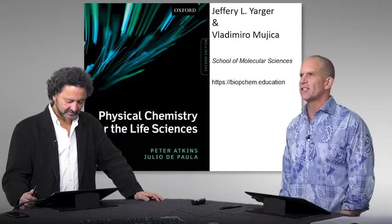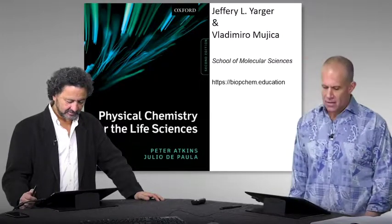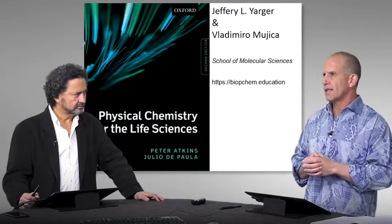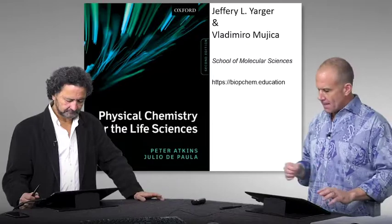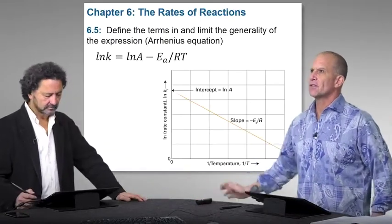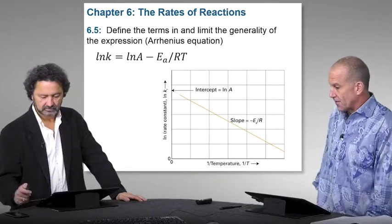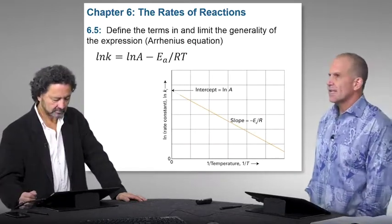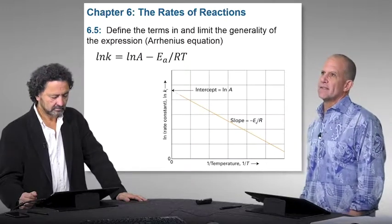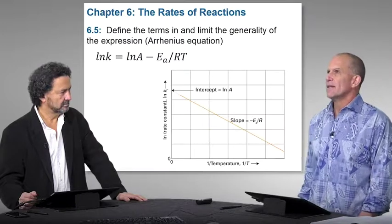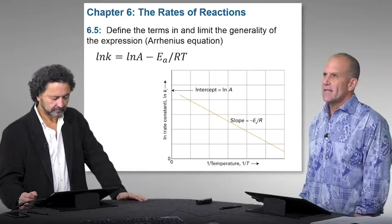So Vladi, we're making another video today looking at, in Atkins, Physical Chemistry for the Life Sciences, edition number two. And we've been looking at the second part of his book, which is looking at kinetics. And specifically, the first chapter in there, chapter six, which is looking at the basics of chemical kinetics. And the discussion question number five says, define the terms in and limit the generality of the expression.